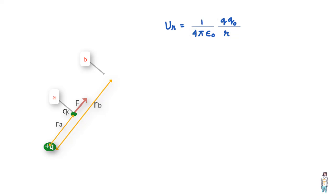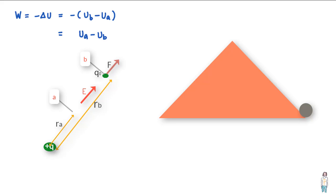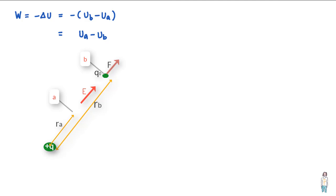When we let the test charge move naturally from point a to point b, it is moved by the electric field — much like a ball rolling down a hill under the gravitational field. In such a case, positive work is done by the field on the test charge, and this work done equals negative delta U, or negative (U_b minus U_a), which equals U_a minus U_b.